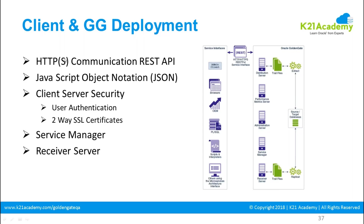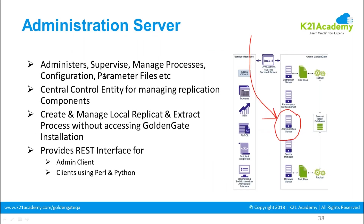The Administration Server is the central control entity. It is used to administer, supervise, manage processes, and handle configuration of parameter files. It is the central control entity for managing replication and all Golden Gate components.